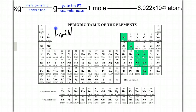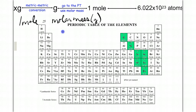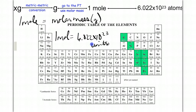Back to our nitrogen example: one mole of nitrogen is equal to 6.022 times 10 to the 23 atoms of nitrogen. So we have two major conversion factors: one mole is equal to 6.022 times 10 to the 23 units. I say units because that could be atoms or molecules — it's going to depend on the situation.